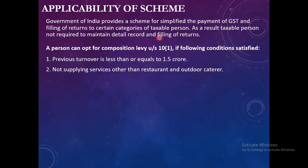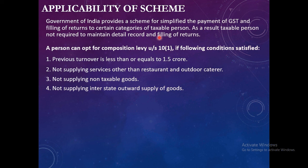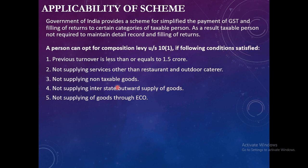Second, they should not supply any services other than restaurant and outdoor catering. Third, they cannot supply non-taxable goods if they want to opt for composition levy. Fourth, in the previous year, they must not have made any inter-state outward supply of goods — they cannot supply from one state to another. However, they can receive inward supply, because the law restricts only outward supply. Fifth, they cannot supply goods through an ECO — an e-commerce operator like Amazon or Flipkart. If a trader is selling goods through these platforms, they cannot opt for the composition scheme.